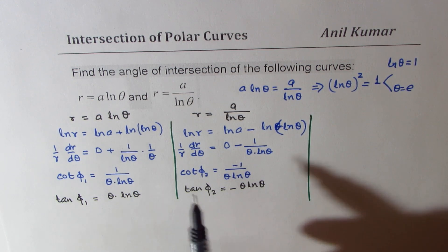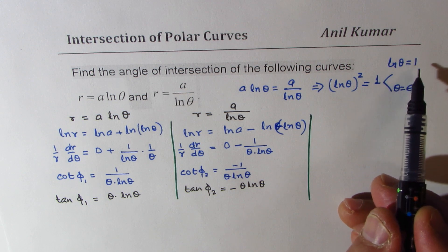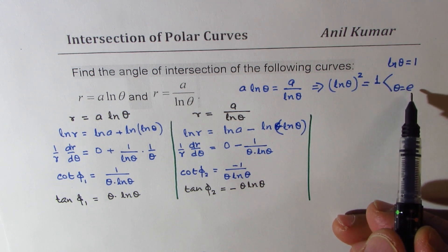Now remember, at the point of intersection ln theta is 1 and theta is e. Do you see that?